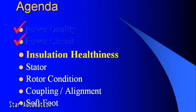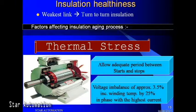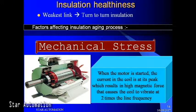Next we will talk about insulation healthiness. Factors affecting the insulation aging process are: contamination — caused by moisture, oil, dirt, coal, and cement dust; thermal stress — to reduce thermal stress in motors, allow adequate periods between start and stop; voltage imbalance of approximately 3.5 percent increases winding temperature by 25 percent in the phase with the highest current; and mechanical stress, which also affects the insulation aging process.